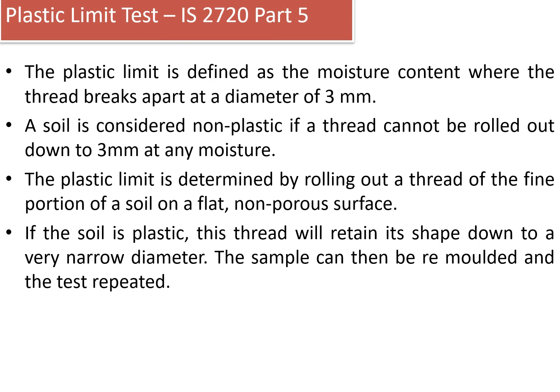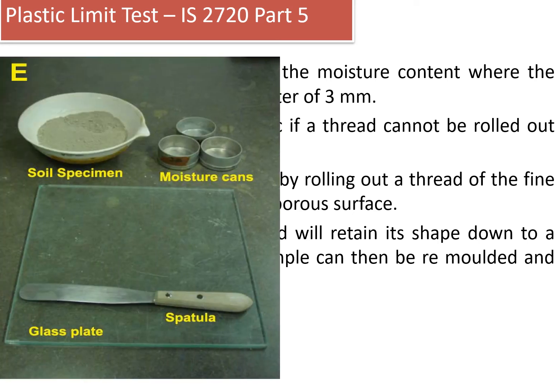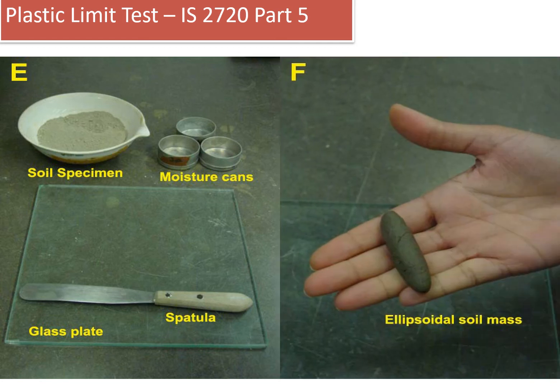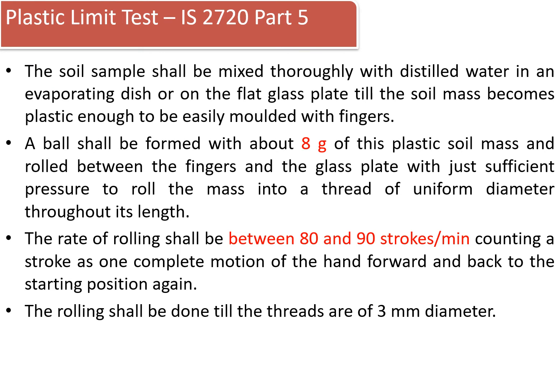The plastic limit is determined by rolling out a thread of the fine portion of soil on a flat non-porous surface. If the soil is plastic, this thread will retain its shape down to a very narrow diameter. The sample can then be re-molded and the test repeated. The apparatus required includes soil specimens on a porcelain dish, moisture cans, glass plate, and a spatula. The soil sample is mixed with moisture content and rolled into an ellipsoidal mass. The soil shall be mixed thoroughly with distilled water until plastic enough to be easily molded. The sample generally taken is 8 grams, and the rate of rolling shall be between 80 to 90 strokes per minute, counting one complete forward and backward motion as one stroke.